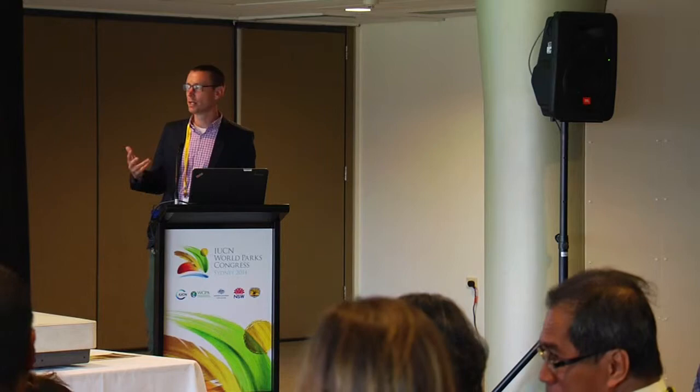We've heard about ecosystem services and they vary — some are more or less amenable to economic valuation. Biodiversity, most people would agree, is probably on the more difficult end of that scale. So we're talking about the identification of co-benefits such as carbon sequestration and water regulation, making these clear to provide the impetus for protected area management to take these areas into consideration, if not for their biodiversity values that are difficult to monetize, then perhaps for the co-benefits that also come out of these areas.